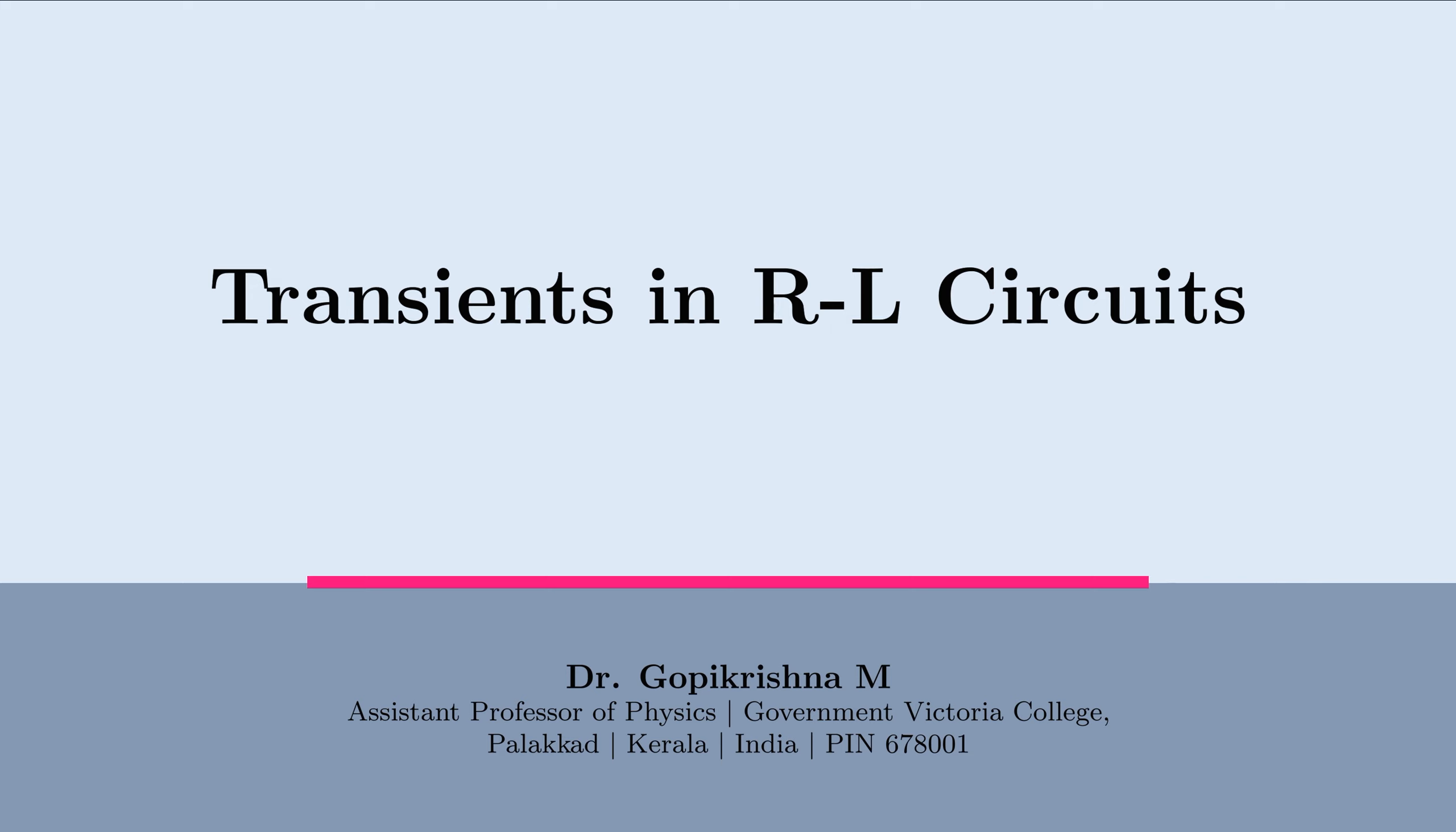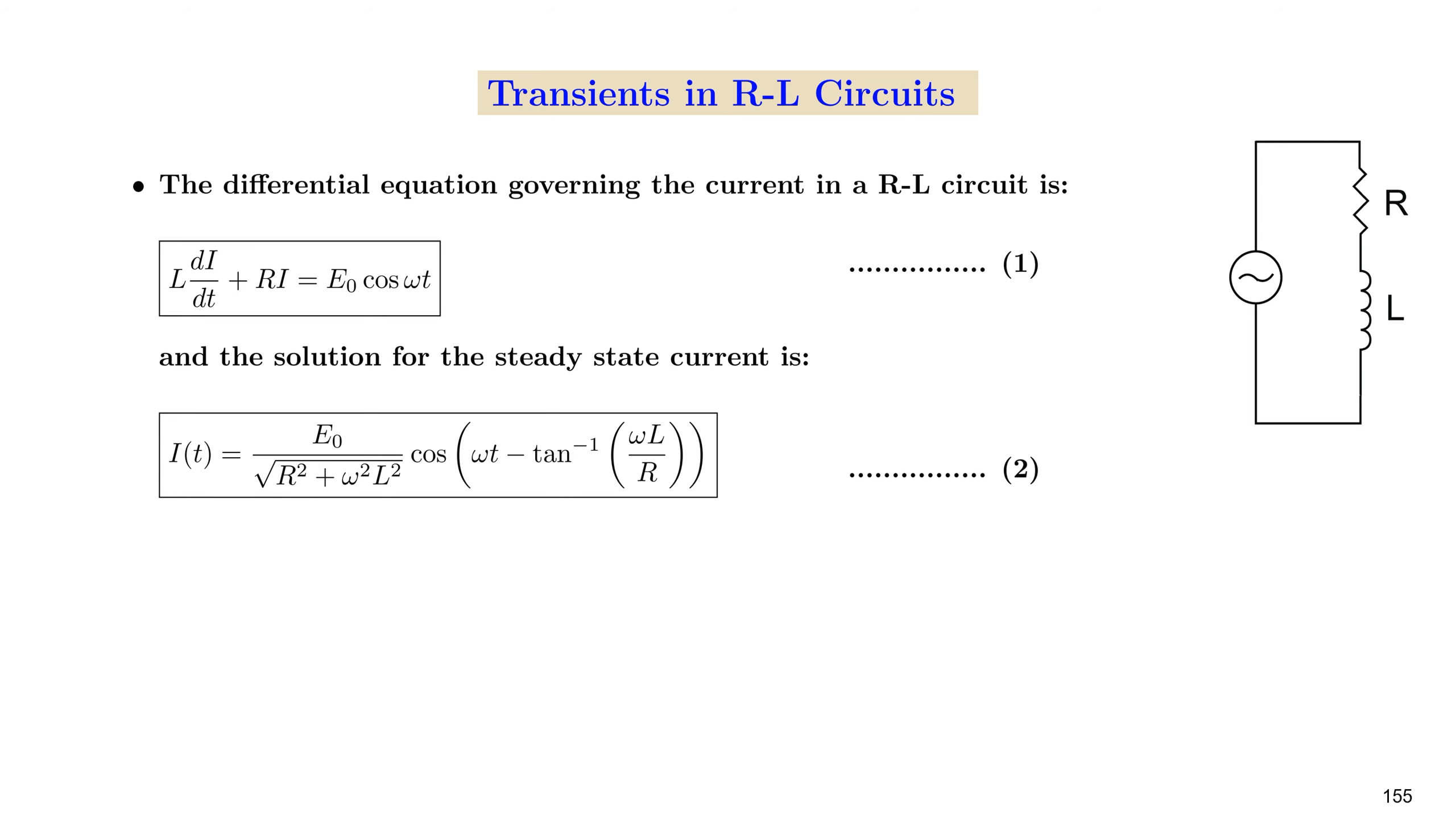In this section, we shall explore the nature of transients when a steady state has been reached. For the analysis, we shall consider the example of an RL circuit. But whatever we discuss here is equally valid for RC or RLC circuits.